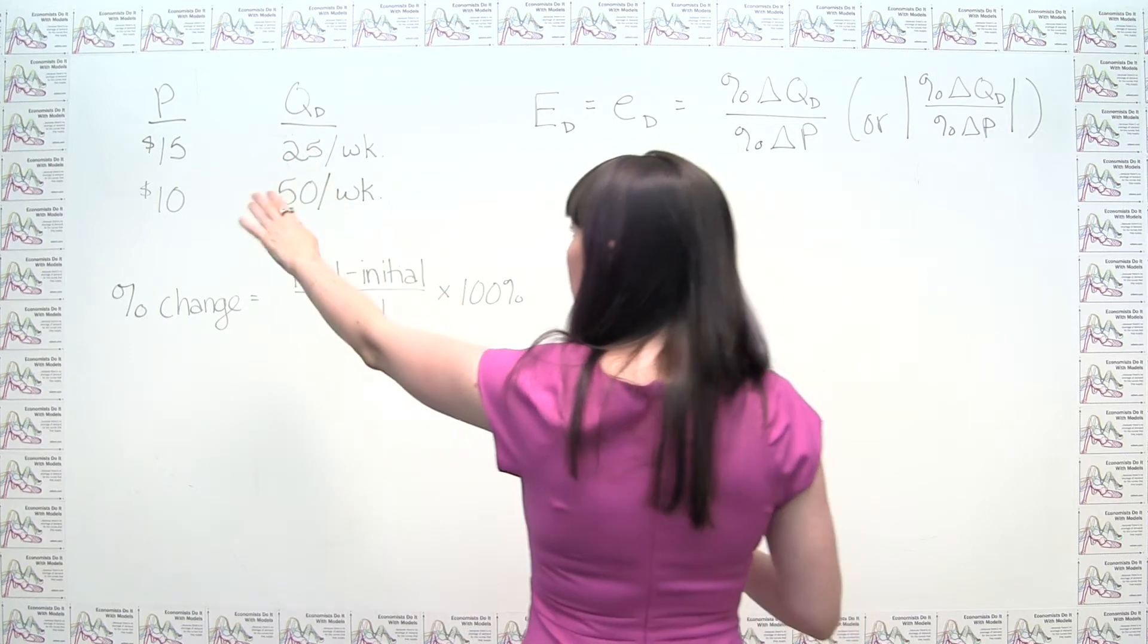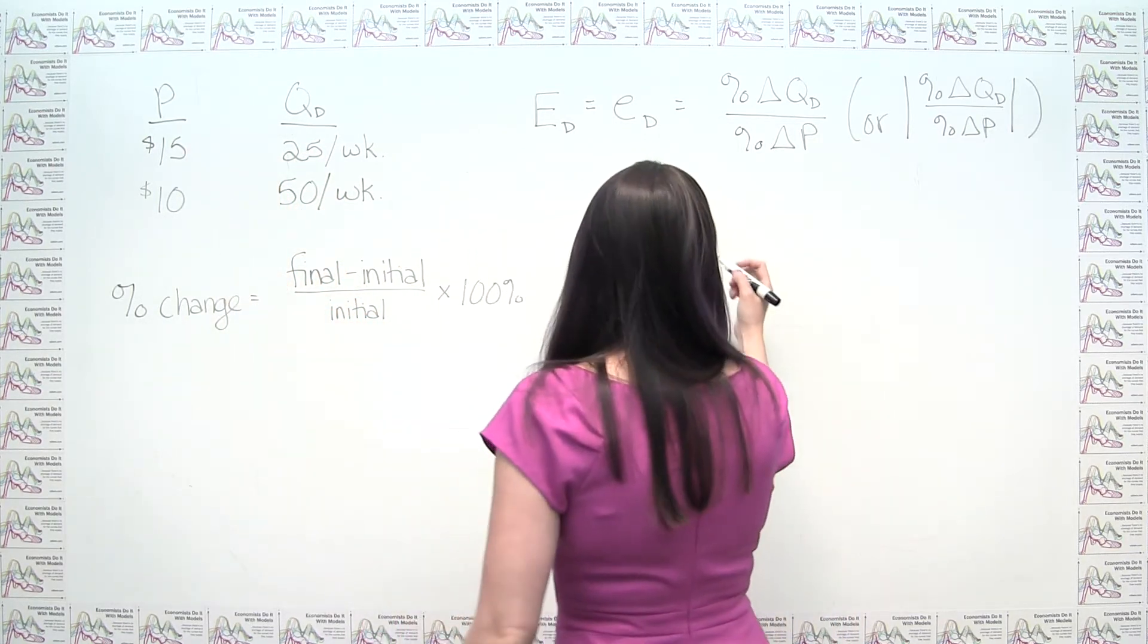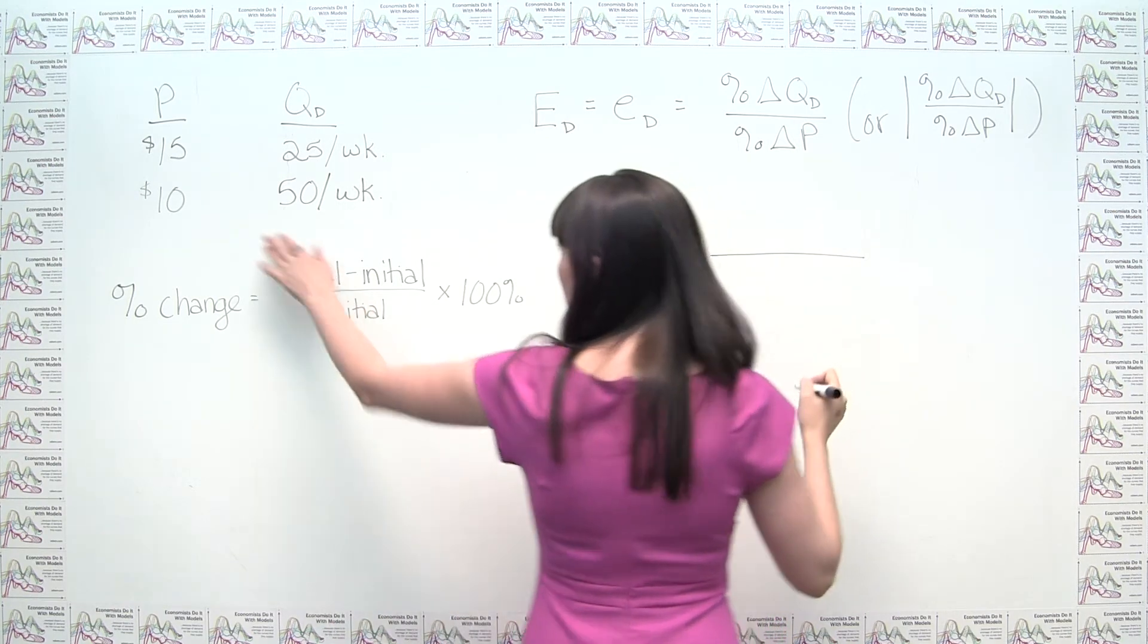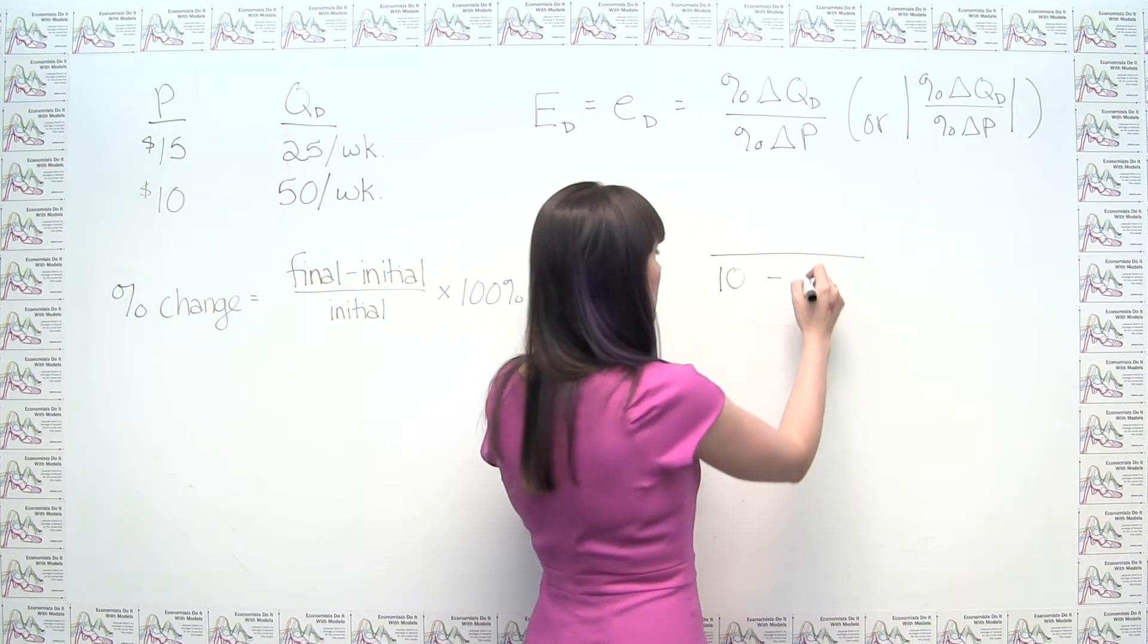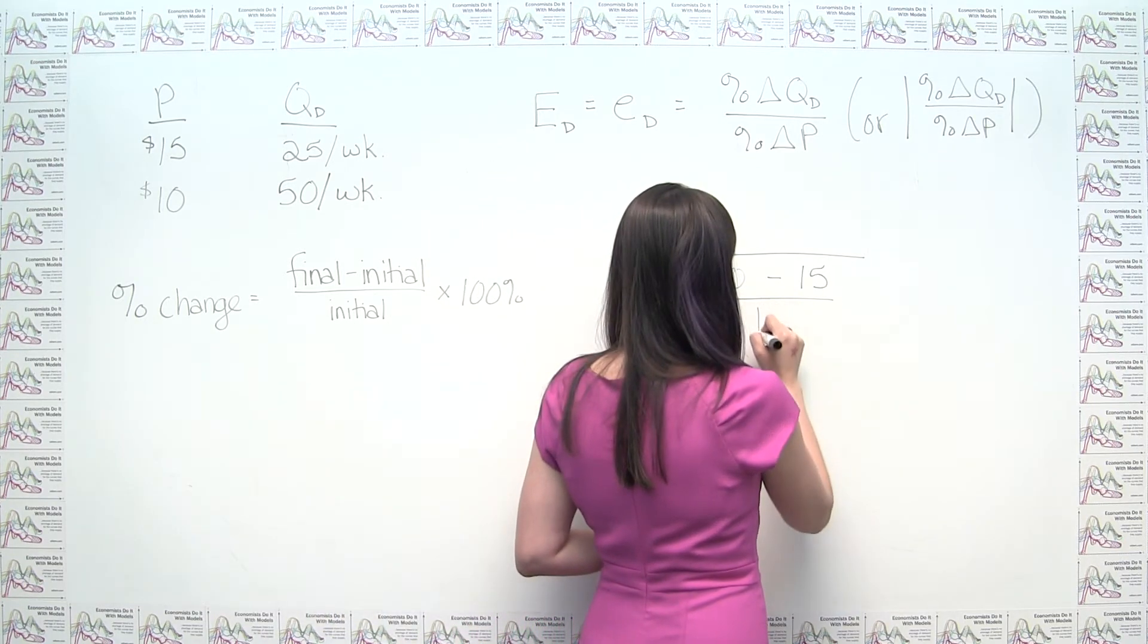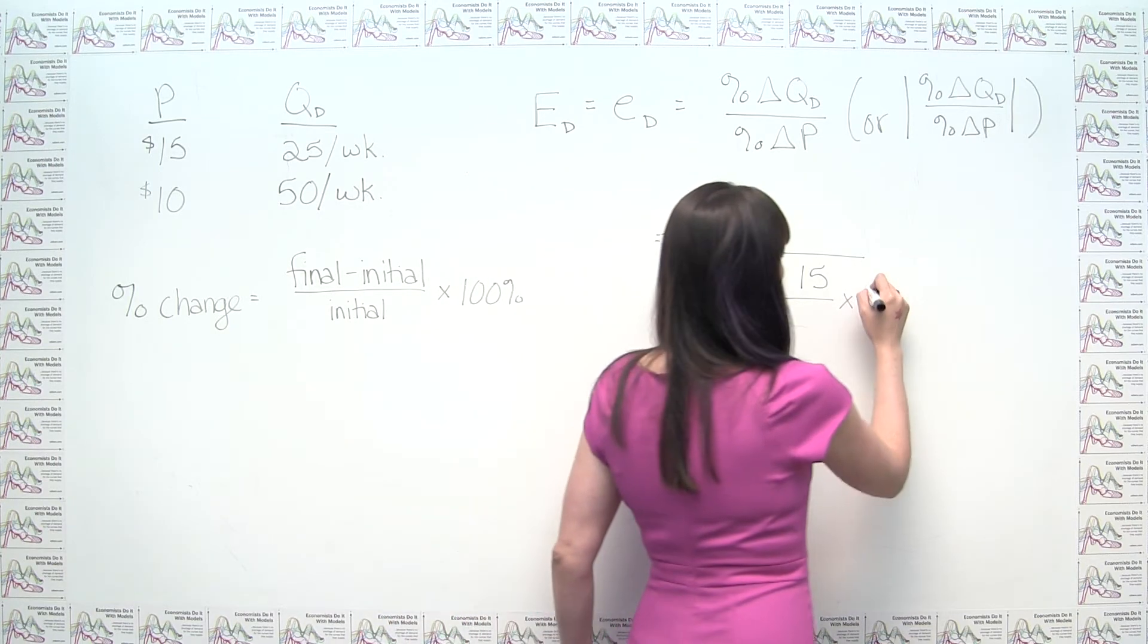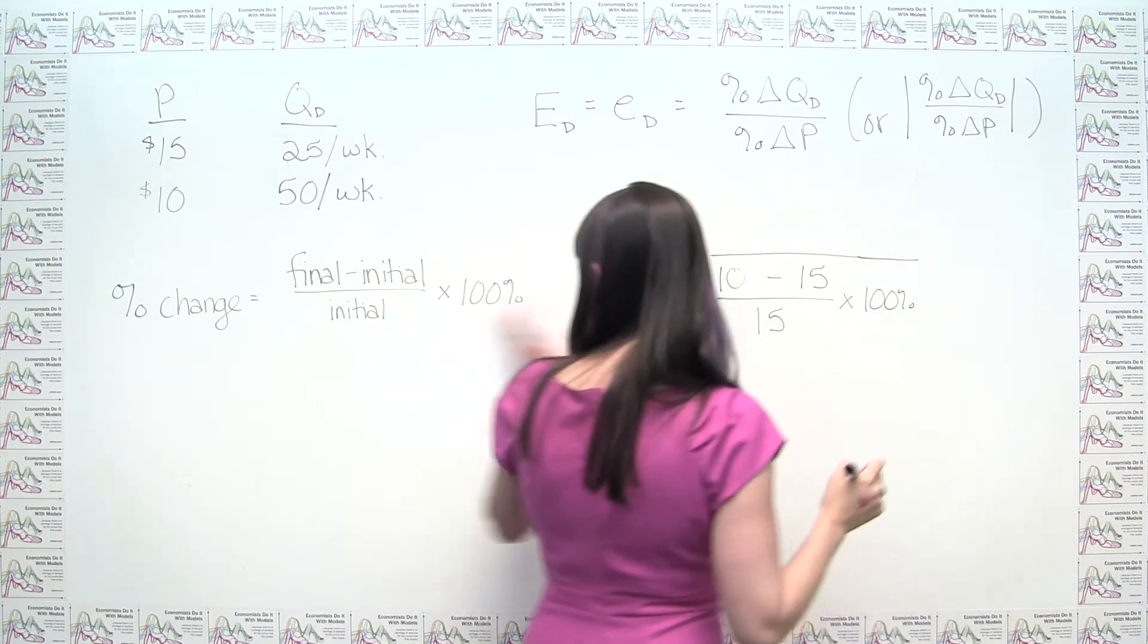We see, well, our price went from 15 to 10. So if we were to look at the bottom of our elasticity fraction, we would say the new is 10, or the final is 10, the initial is 15, divided by initial, which is 15, times 100%. So that's just plugging in this guy here.